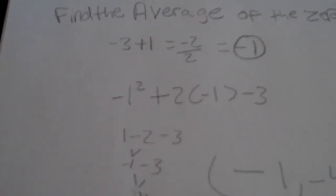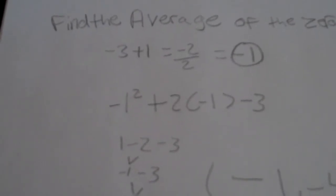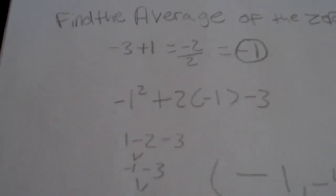And then since there are two zeros on this graph, you divide by 2 and your answer will be negative 1. Negative 1 is the x value on the vertex.